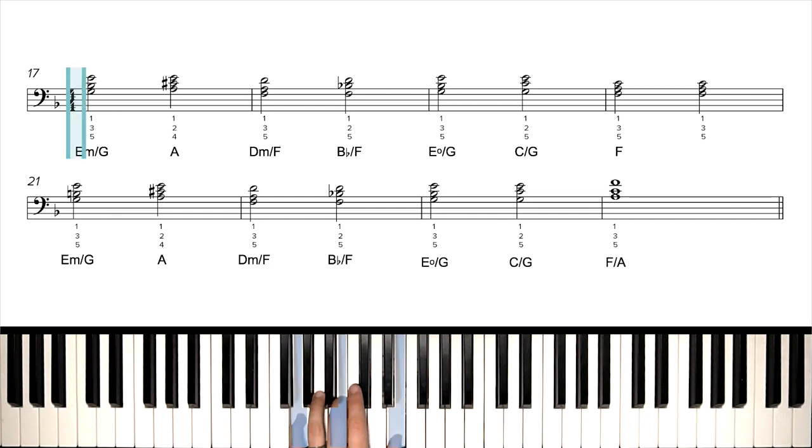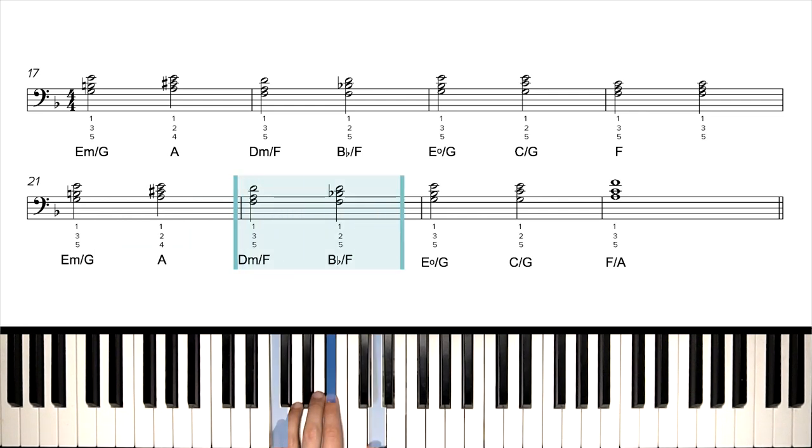First is E minor over G. Then we have A major, D minor over F, and then B flat over F. Jumping up a little higher again, this time to an E diminished over G. This is also kind of like a C7 over G. And then second half of this measure, C over G. Fourth measure, we go to a root position F major chord. We do that twice. Next line down starts the same way as beginning. E minor over G, A, D minor over F, B flat over F, E diminished over G, and C over G.